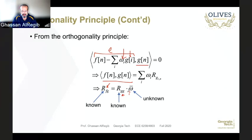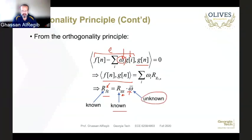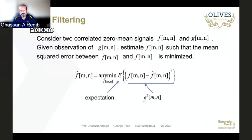We have a way to find the cross-correlation between f and g, so the quantity on the left-hand side is known. The autocorrelation of g is also known. What we are really after in this whole setup is to find these weights, so we can solve for that.